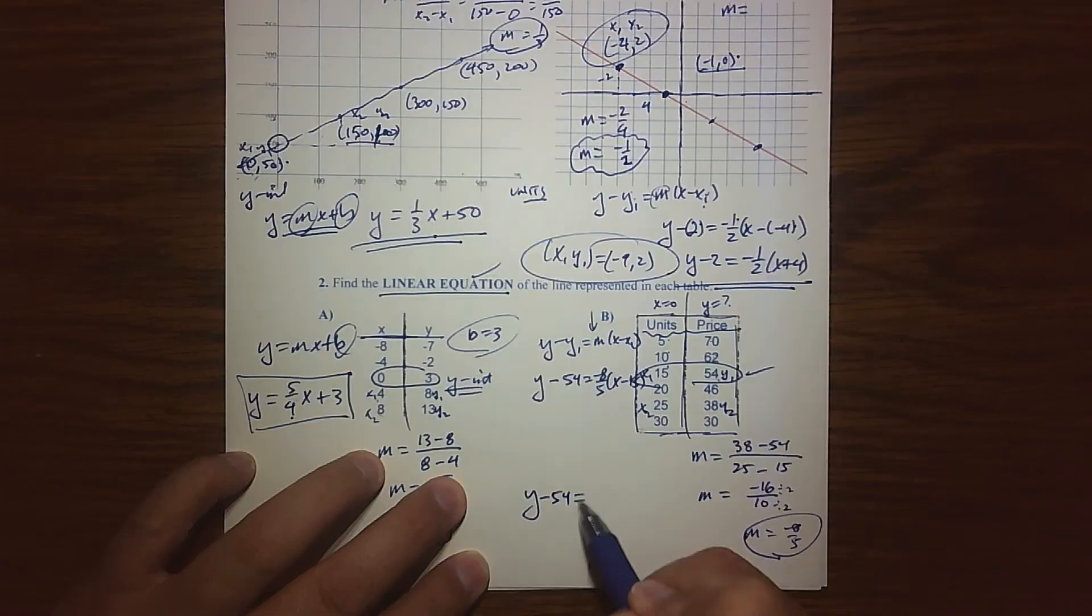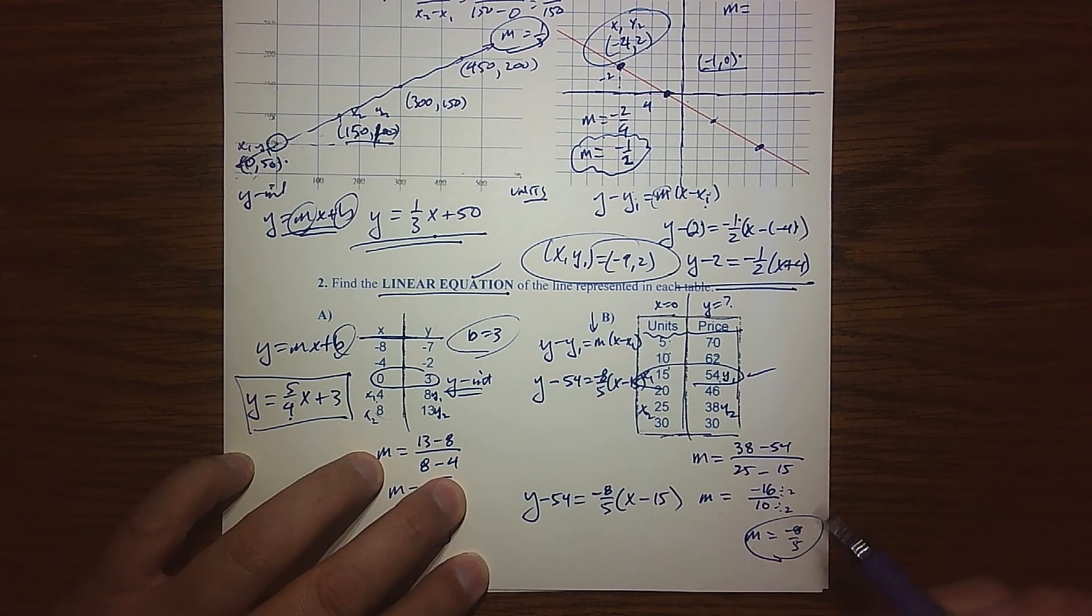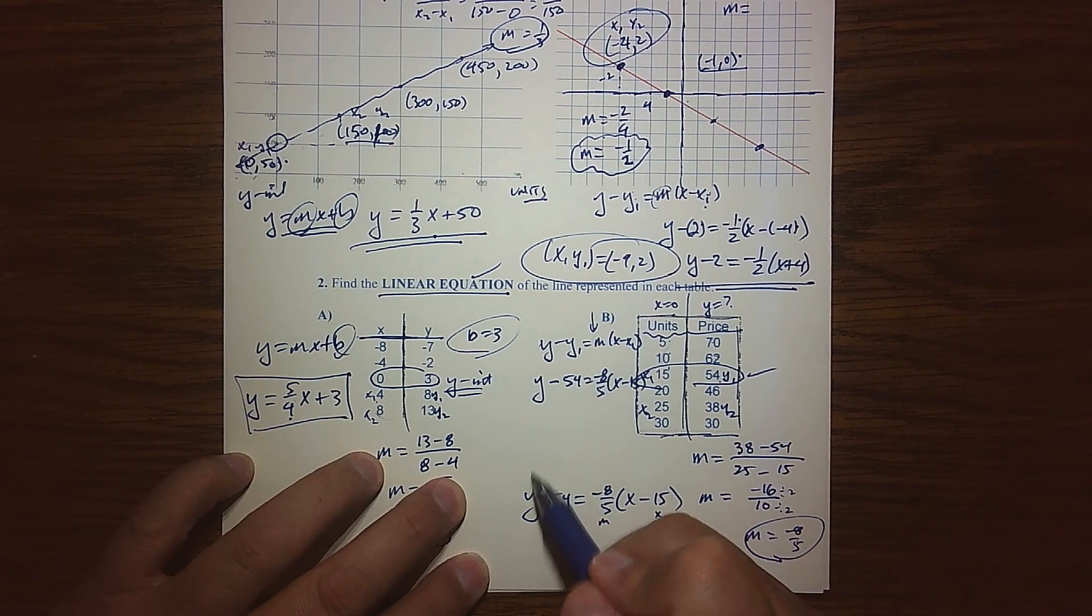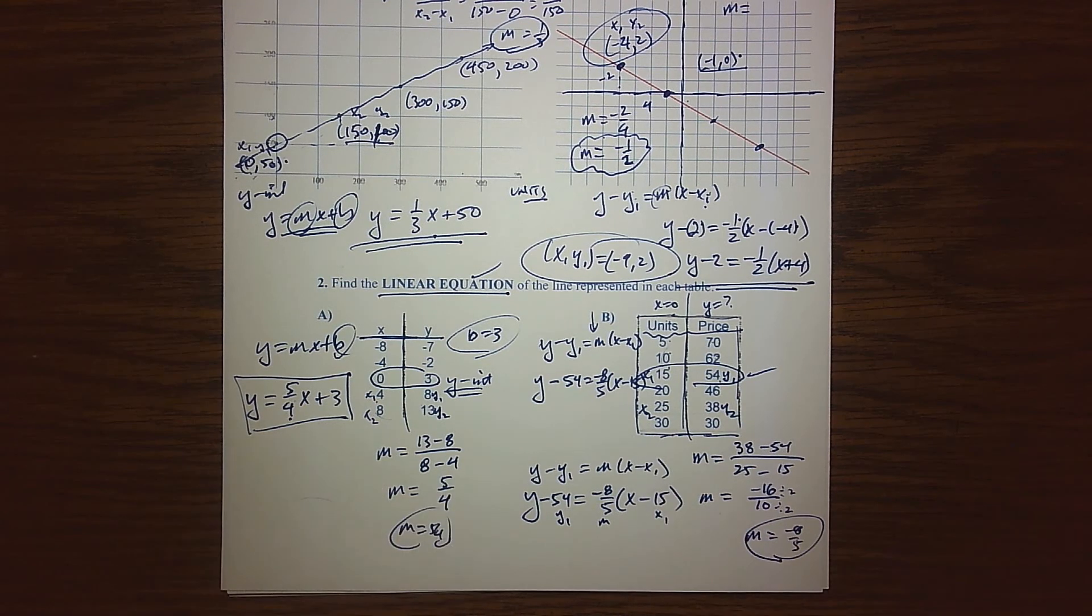we have y minus y1 equals my slope x minus my x1. Let me make that a little cleaner. So y minus 54 equals negative 8 fifths x minus 15. There's my y1, there's my x1, and there's my slope. y minus y1 equals m times x minus x1. Okay.